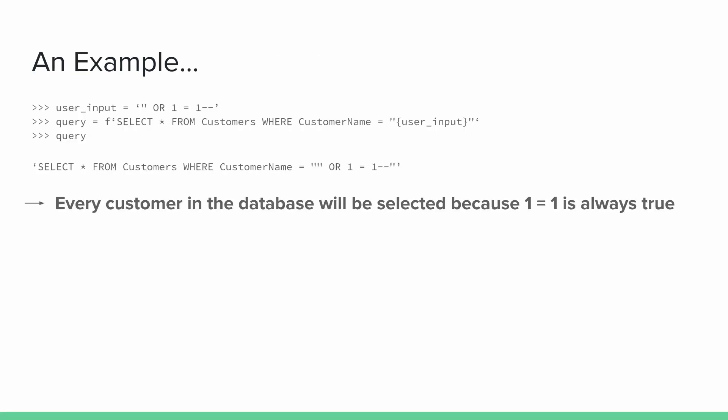Here's a quick example. We select every field from customers where the customer name is equal to — and as you can see, we have a starting double quote, then we inject the user input, and then we close with a double quote. So basically the user input gets put in between the two double quotes. If the user were to type in something like 'Steven' as the user input, then we would select every field from customers where the customer name is equal to 'Steven'.